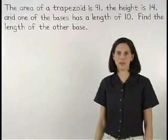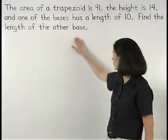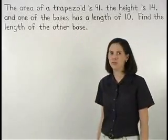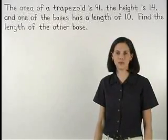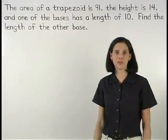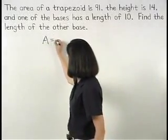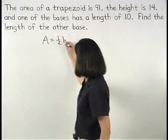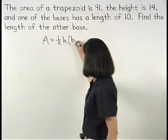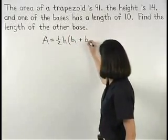In this example, since we're asked to find the length of a base, let's use our formula for the area of a trapezoid that involves the bases, which is area of a trapezoid equals one-half height times parentheses base one plus base two.